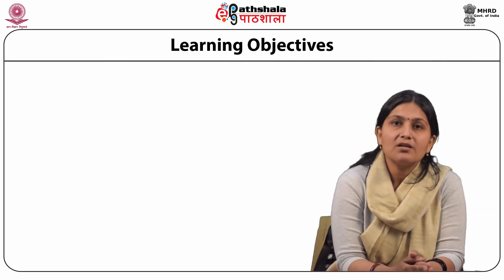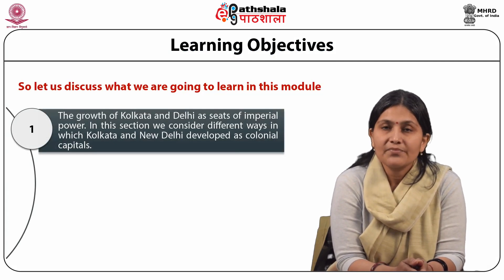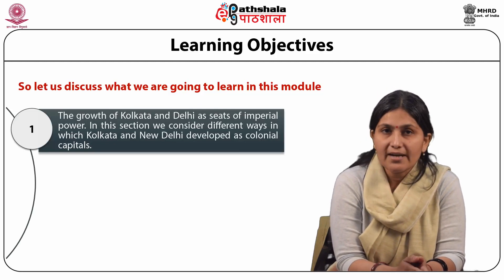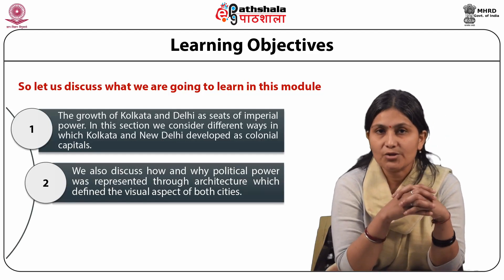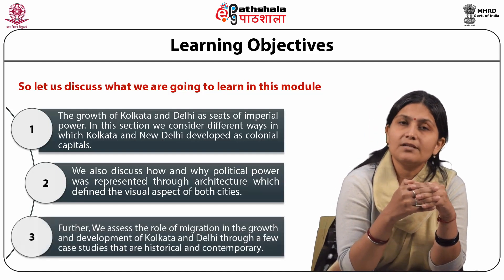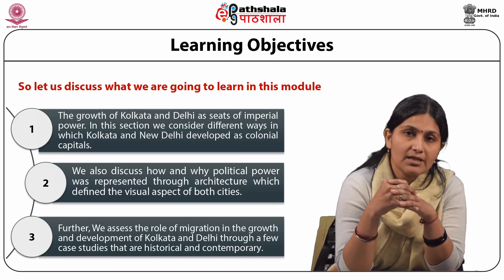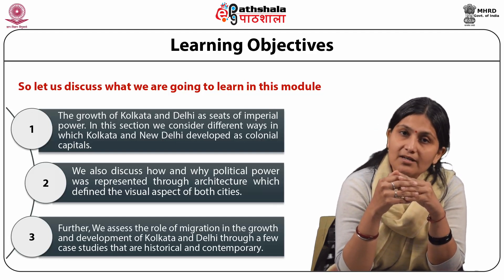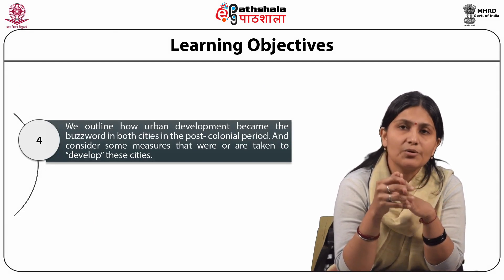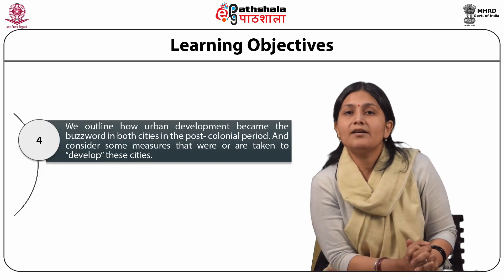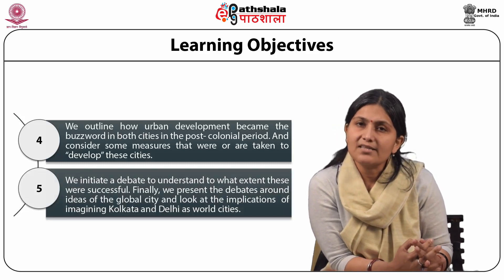The learning objectives of this module are: we will study the growth of Kolkata and Delhi as seats of imperial power. We consider different ways in which Kolkata and New Delhi developed as colonial capitals and will discuss how and why political power was represented through architecture which defined the visual aspect of both cities. We are also going to assess the role of migration in the growth and development of Kolkata and Delhi through historical and contemporary case studies. We will outline how urban development became the buzzword in both cities in the post-colonial period, consider measures taken to develop these cities, and initiate a debate to understand to what extent these were successful.